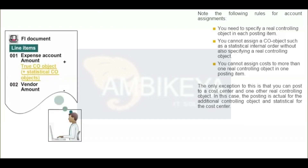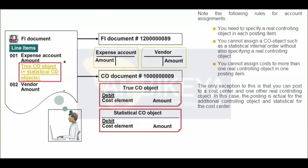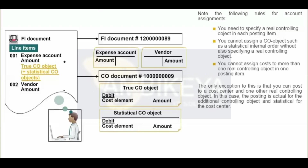In order to post two accounts in financial accounting that have a primary cost element in CO, you need to assign a CO account assignment object. The account assignment object itself can either be a real or a statistical object. For example, an internal order is defined as real or statistical when it is created. A real order can only be executed with real postings and a statistical order only with statistical postings. The cost center is an exception to this rule — it is always a real object. It can be posted to in both real and statistical postings. Postings on real controlling objects can be allocated to other objects in CO.